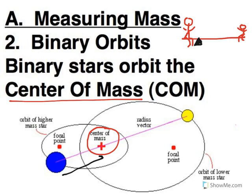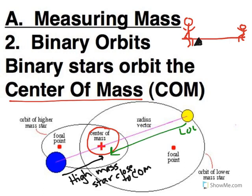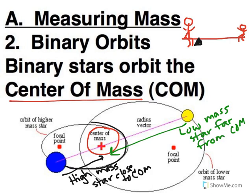You're going to have the high mass star is going to be close to the center of mass. And your low mass star is going to be much farther away. So their orbits are not going to be the same size. The high mass star is going to follow a much smaller orbit.